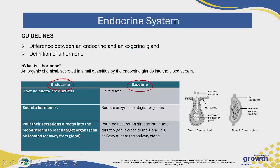An endocrine gland is a gland that does not have ducts — in other words they are ductless — and these glands secrete hormones. They pour their secretions directly into the bloodstream to reach target organs. An exocrine gland, on the other hand, has ducts. A duct is a small tube, and the secretions travel up the duct to where they are needed. Exocrine glands usually secrete enzymes and digestive juices and pour their secretions into the ducts, not into the bloodstream.